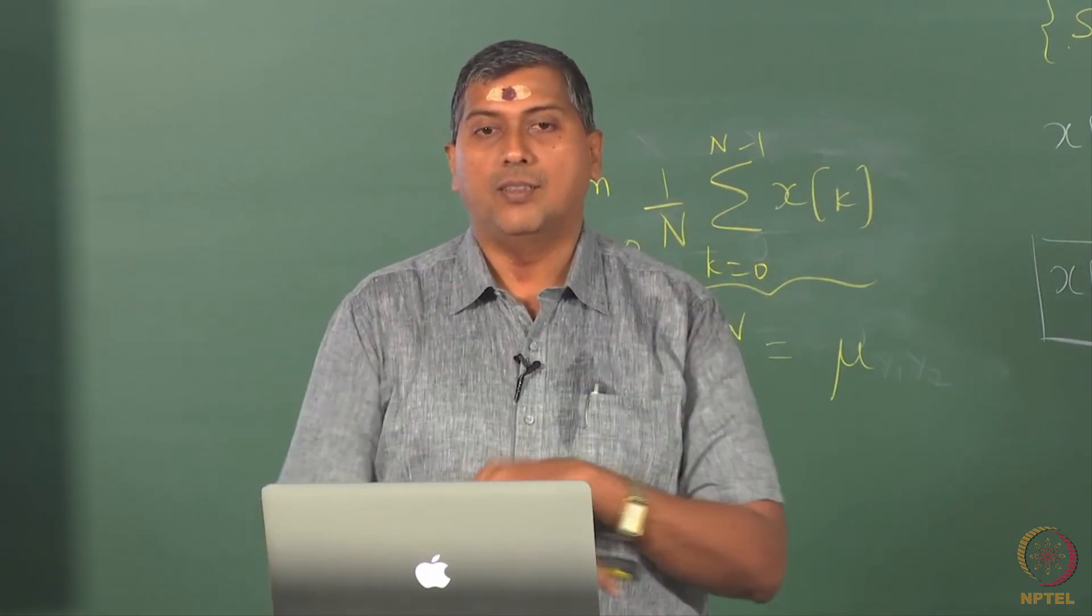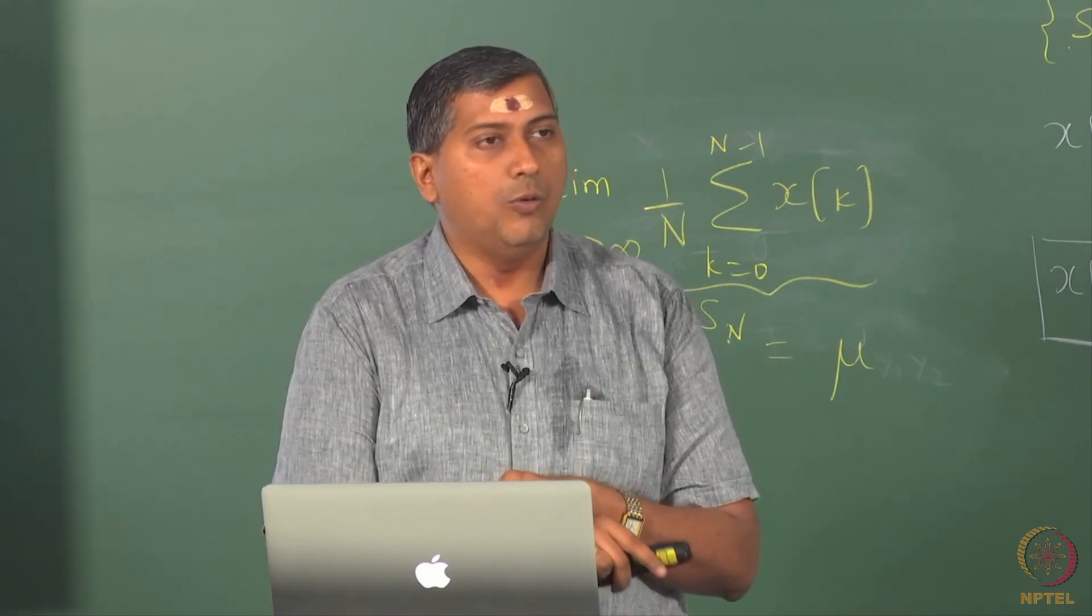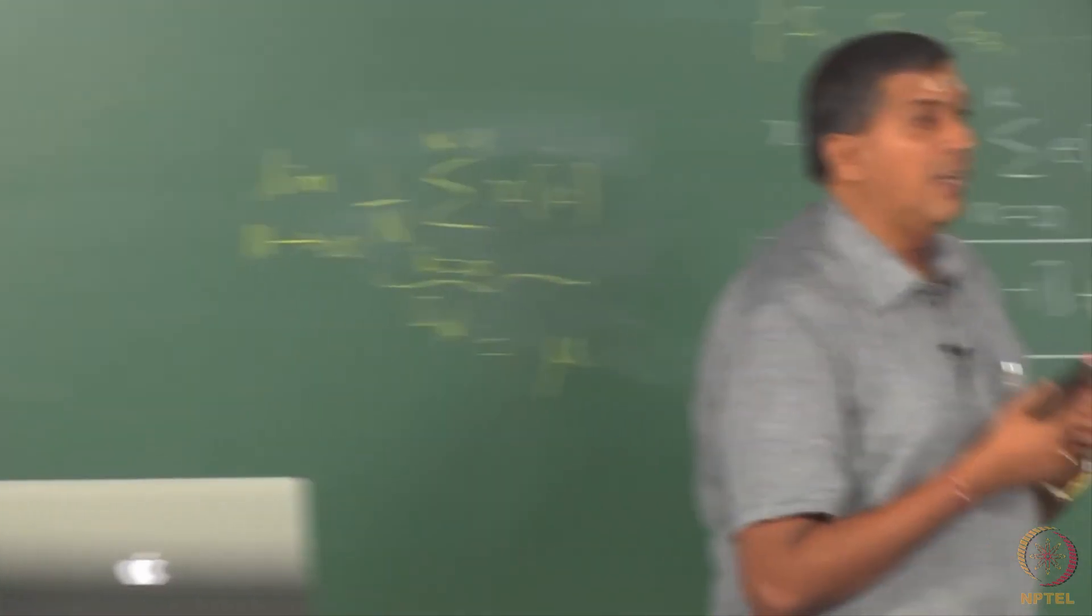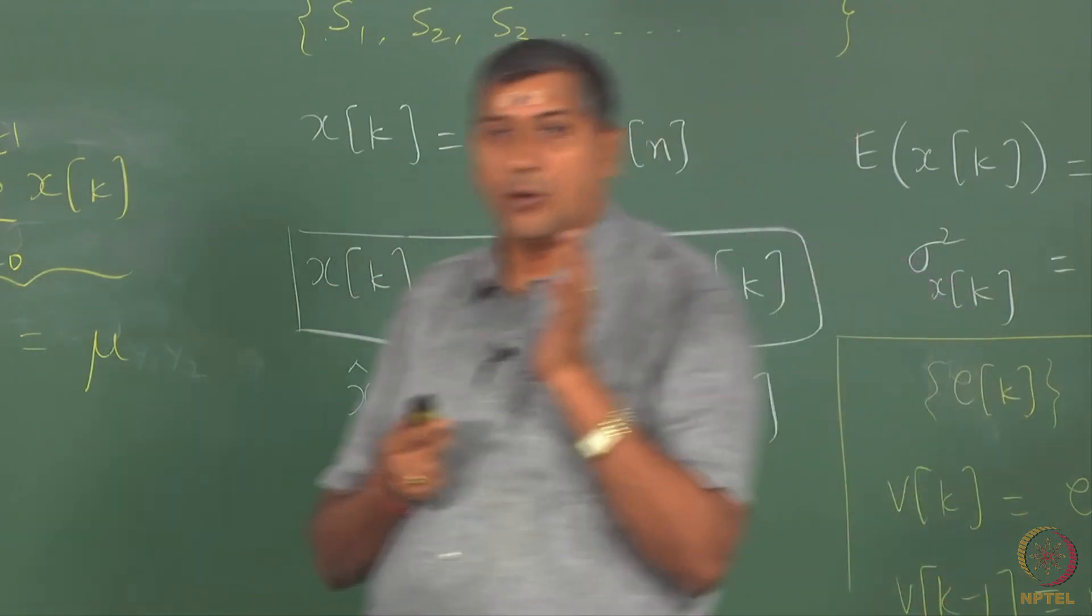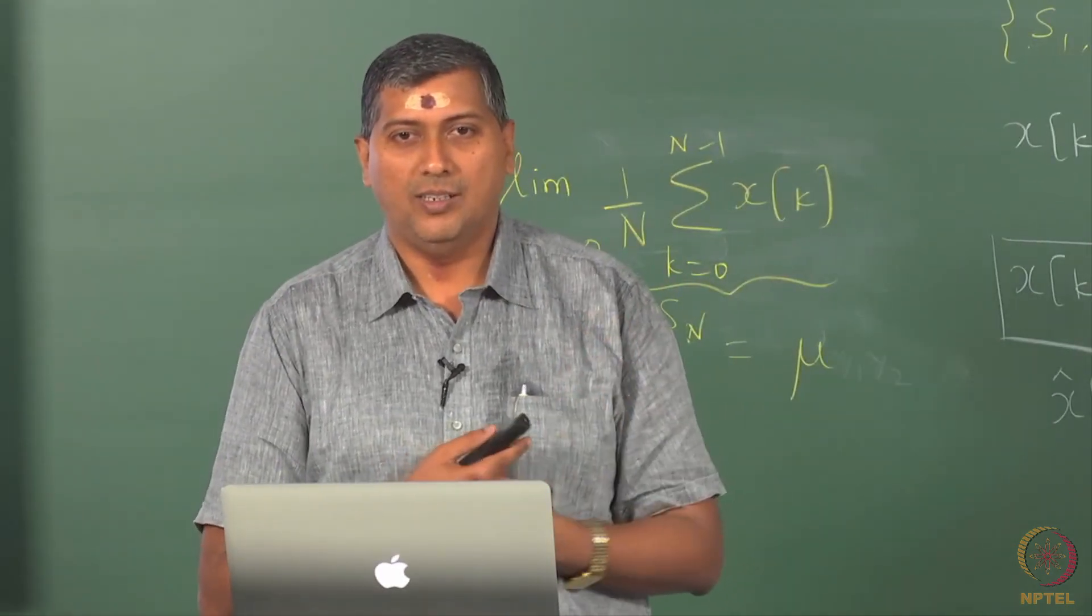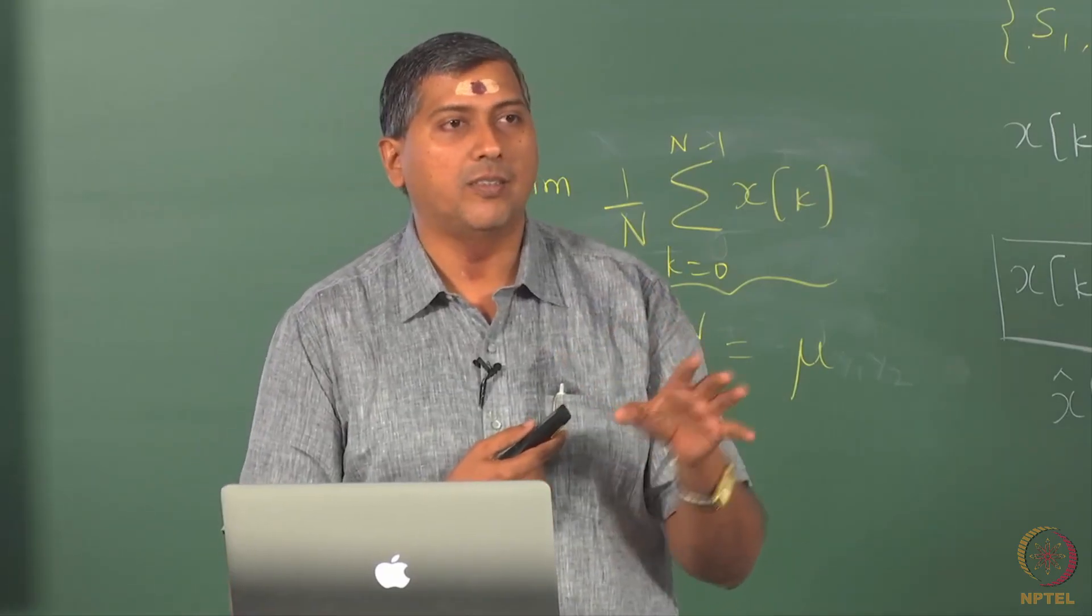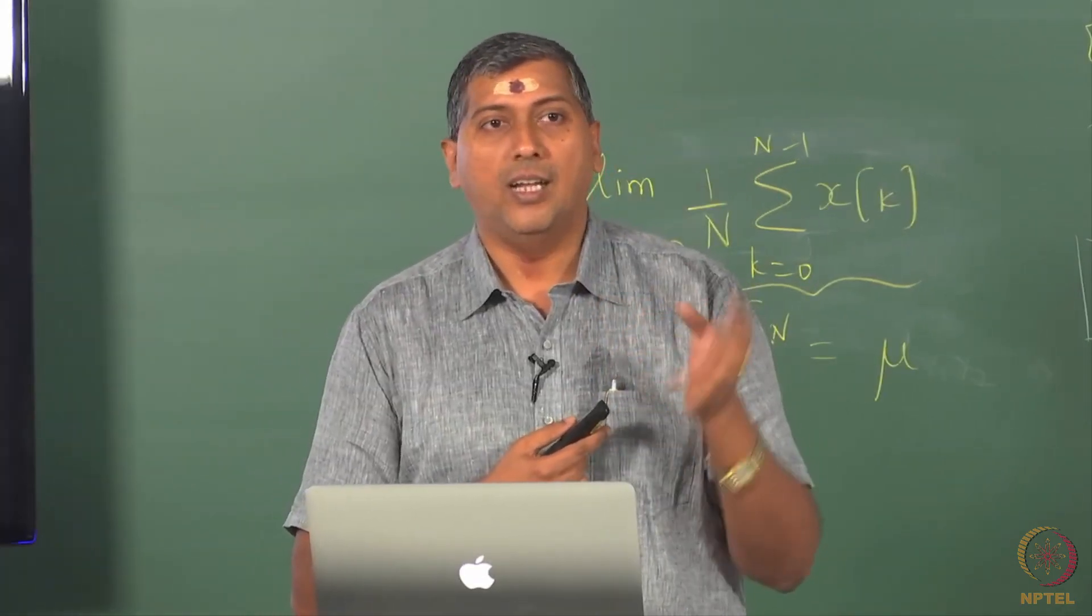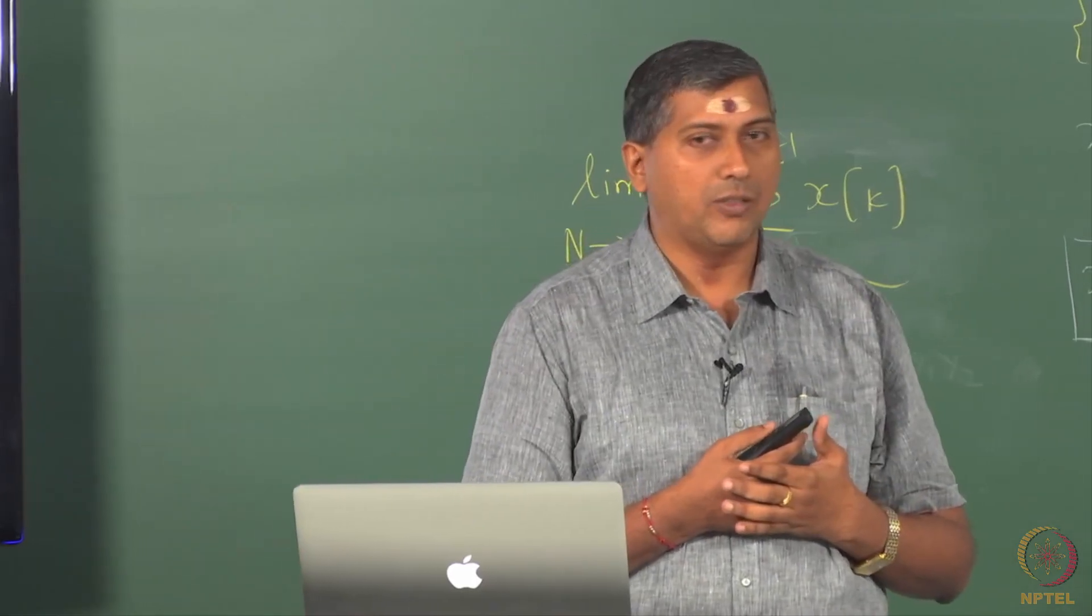That brings close to the discussion on stationarity and ergodicity. Now assuming that the process is stationary, assuming that the process is ergodic, we will study the theory of first of all determining whether process is predictable, how do we build models for such processes - stationary ergodic processes. We do not keep repeating that the process is ergodic. Very soon, we will drop the term. We will only keep talking about stationarity and that also we may drop for a while because we will confine ourselves to stationary processes.